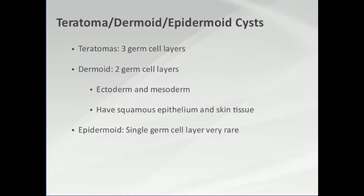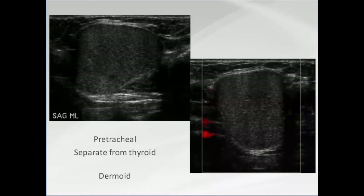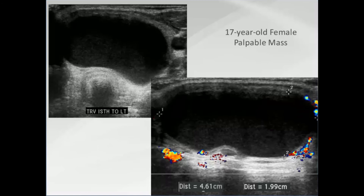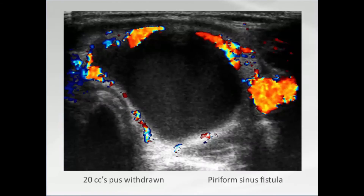Teratomas are one of the terrible T's that can happen in the superior mediastinum and can also be seen in the neck. Teratoma, dermoid, or epidermoid are defined based on how many germ cell layers they contain — that's a pathology diagnosis, not a sonographic one. Here's a pre-tracheal lesion, separate from the thyroid, very homogeneous, that could have been ectopic thyroid tissue but turned out at pathology to be a dermoid. A 17-year-old girl with fullness in her left neck had a five-centimeter complex cystic lesion — possibly a branchial cleft cyst or lymphocele.